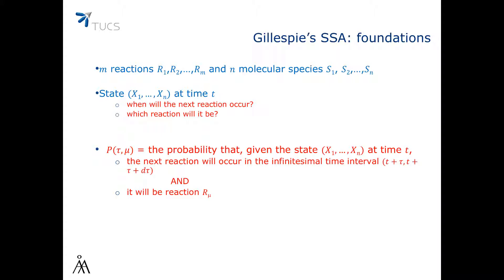Note that if we thought about the probability of a reaction occurring exactly at time t plus tau, then the probability would be zero. The strategy is going to be that, based on the chemical master equation, we will deduce the analytical expression P of tau and mu.